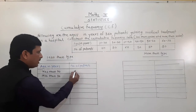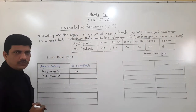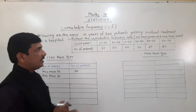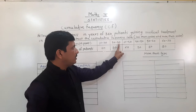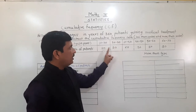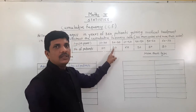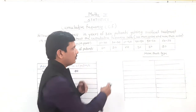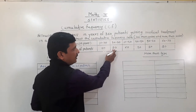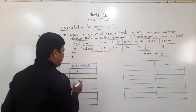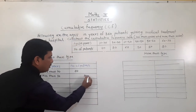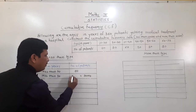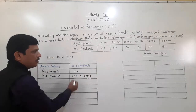Less than 30 — what does that mean? Less than 30 means all observations below 30 are included. So 90 plus 40 gives us the count for less than 30. Both the 10–20 and 20–30 intervals are coming under less than 30.